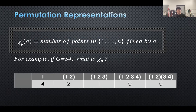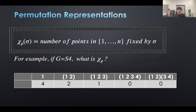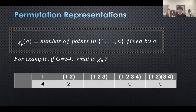Let's look at an example where G is S4. What is chi P? We just need to ask: how many points in {1, 2, 3, 4} are fixed by each element? All points must be fixed by the identity, so the answer is 4. For the element (1 2), only 2 points are fixed — namely 3 and 4. And only one point, which is 4, is fixed by the element (1 2 3), so the answer is 1.